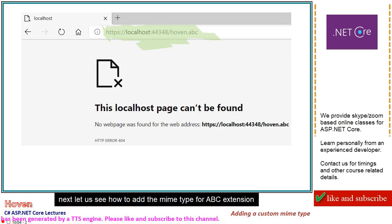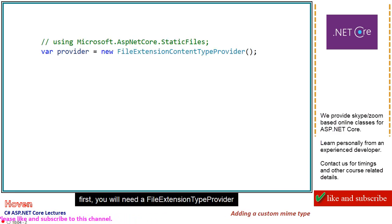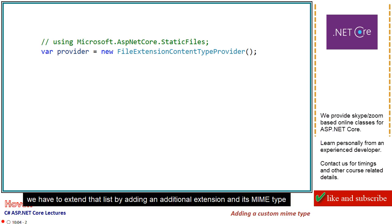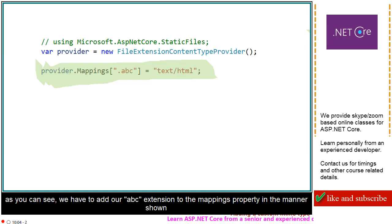Next, let us see how to add the MIME type for the ABC extension. First, you will need a FileExtensionContentTypeProvider. This class contains a mappings property that already contains the entire list of 400 MIME types. We have to extend that list by adding an additional extension and its MIME type. As you can see, we have to add our ABC extension to the mappings property in the manner shown.